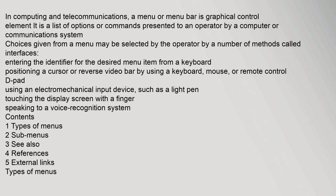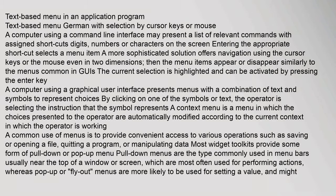Other methods include speaking to a voice recognition system. Types of menus include text-based menus, sub-menus, and others. In an application program, a text-based menu may be navigated using cursor keys or a mouse. A computer using a command line interface may present a list of relevant commands with assigned shortcuts — digits, numbers, or characters — on the screen. Entering the appropriate shortcut selects a menu item.